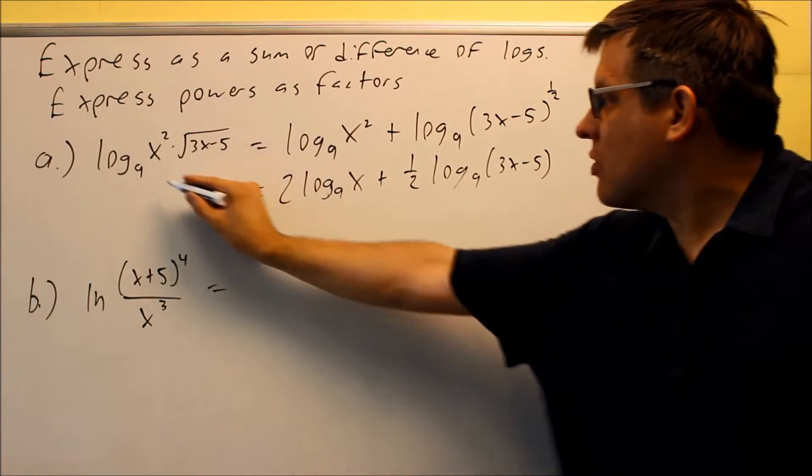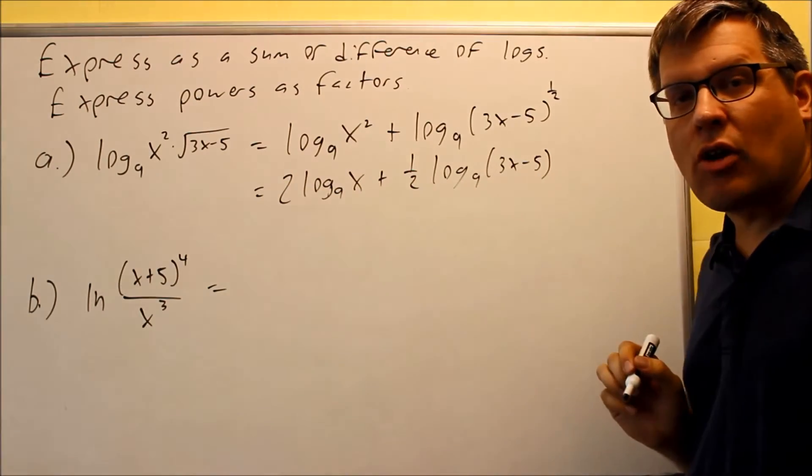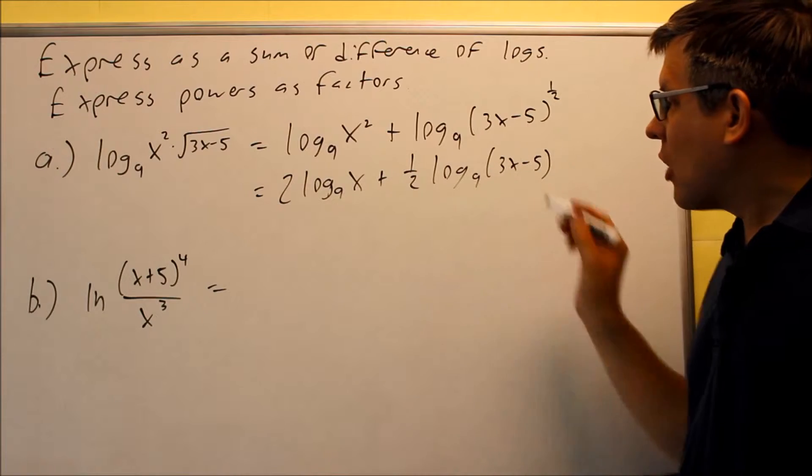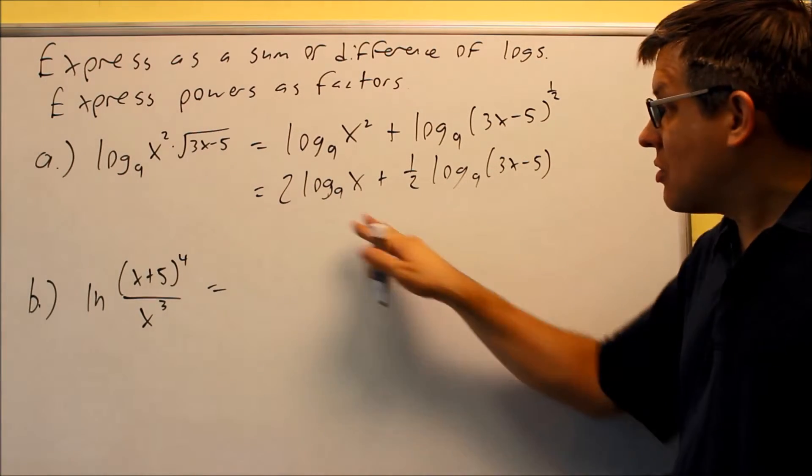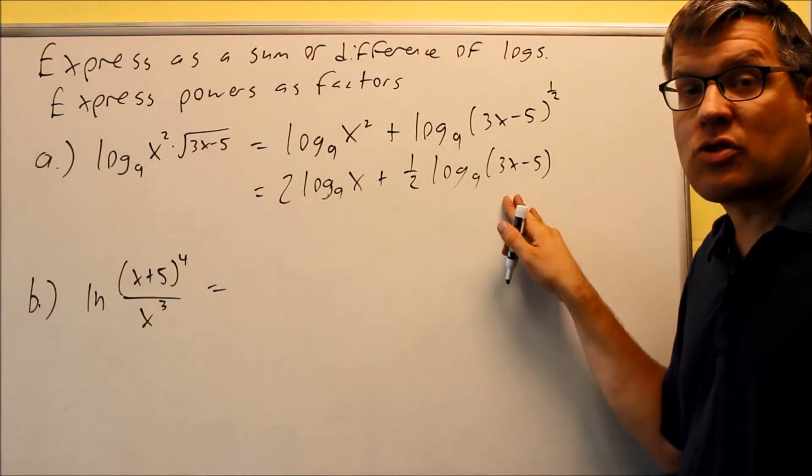Notice that I have the same base. I have to use the same base as the original one because that's how our properties work. So that's as far as we can go with our answer. We can't do anymore because we don't know what x is. So you actually leave your answer as that expanded answer there.